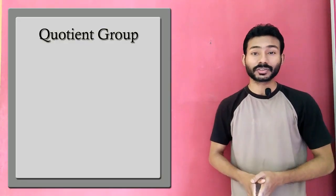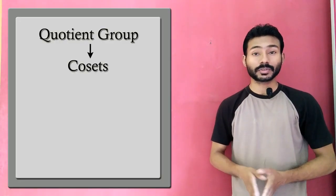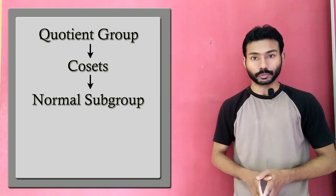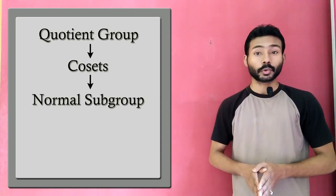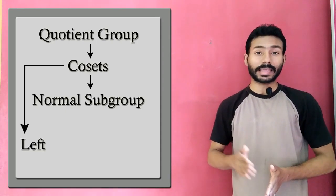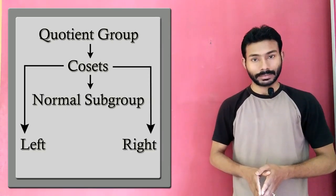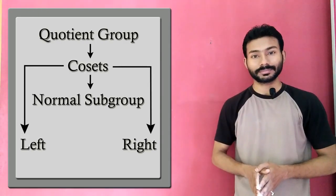A quotient group is a collection of cosets — cosets which are obtained when we consider a normal subgroup. In other words, cosets which are both left and right cosets. Let's begin from the bottom of this chain.